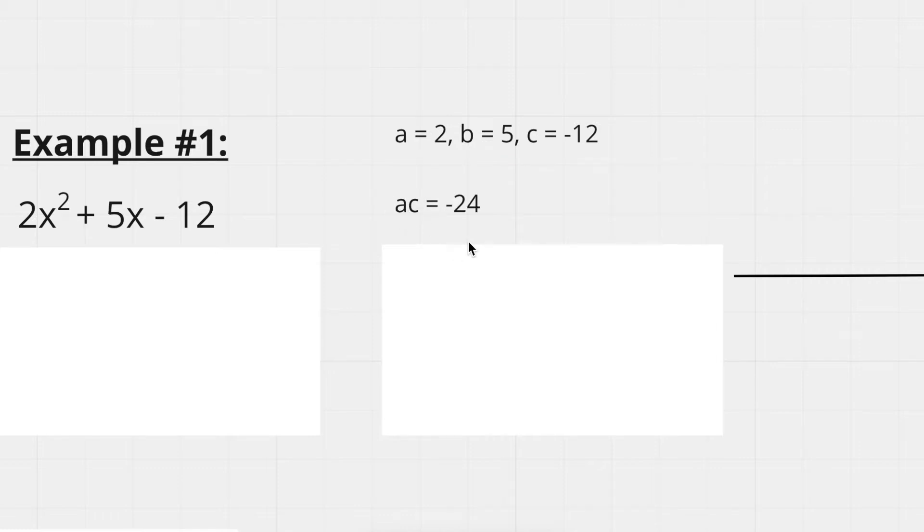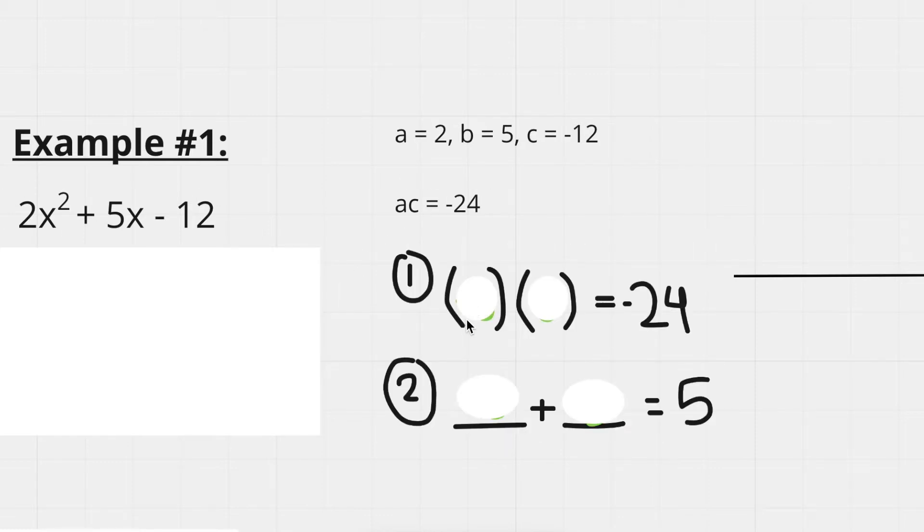I've also written our ac term, as we're going to need that when we find our two numbers to break the b term into. So ac is just negative 12 times 2, which is negative 24. Our next step was to find two numbers that both multiply to give you ac, negative 24, and they should also add to the same value as b, which is 5.